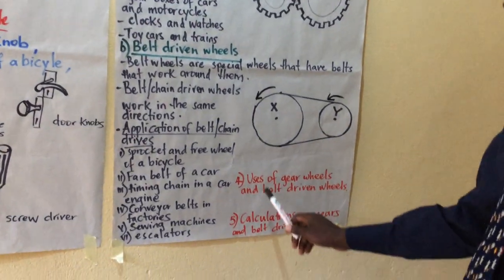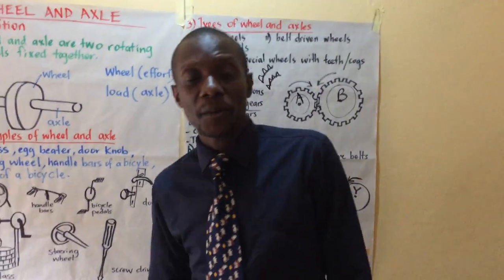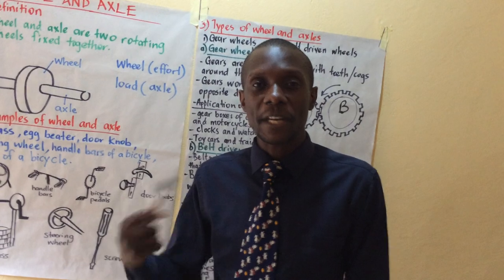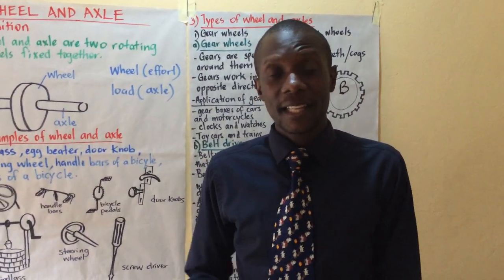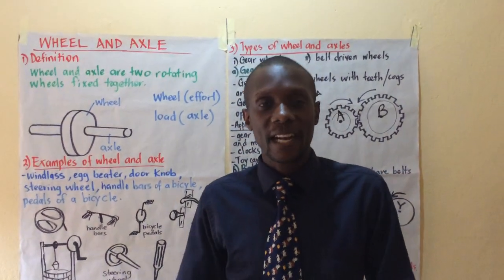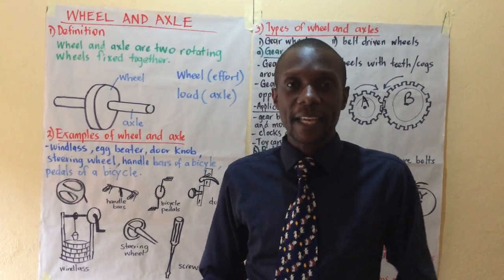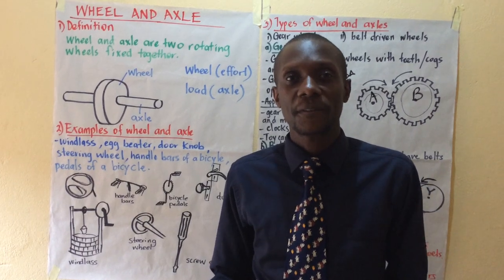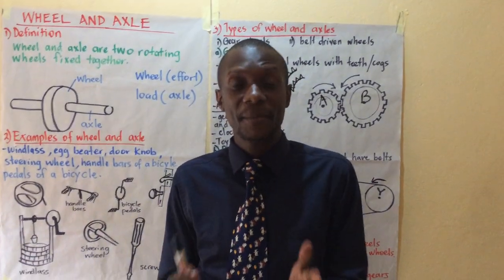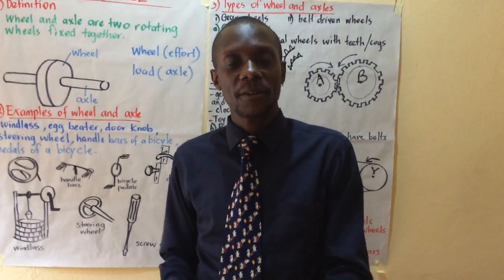Let's go into the uses of gear wheels and belt driven wheels. The first importance is they help in multiplying or reducing the speed of rotations. For example, if you are driving a manual car in gear one and you want it to run faster, you need to engage gear two, then three, then four and so on. And in case you want to reduce the speed, if you are in gear five and you see a cow in the middle of the road, you might need to engage a lower gear to reduce the speed of the rotations.